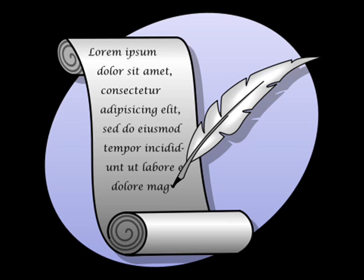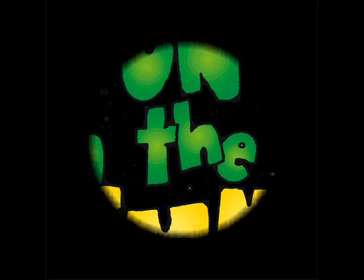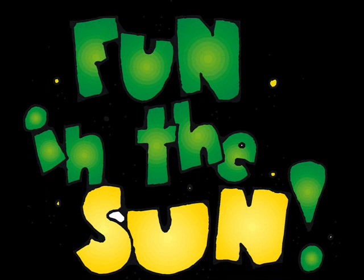Write down everything that you think about, everything that comes to mind. Any idea may become a good topic. Any crazy idea that you think about can become a short story or a poem. Brainstorming can help you write something that is serious or just a story that you write for fun.